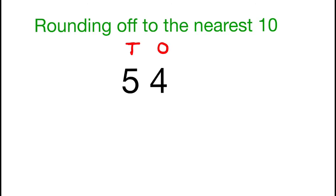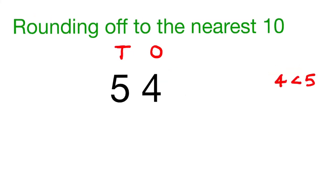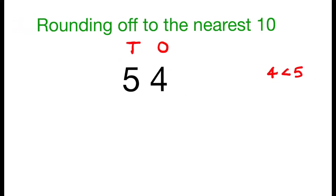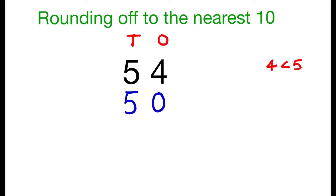In the number 54, the digit in the ones place is 4. Since 4 is less than 5, there will be no change for the digit in the tens place. We write 5 in the tens place. Since we are rounding off to the nearest tens, the digit in the ones place should be 0. We write 0 in the ones place. So, we round off 54 as 50, correct to the nearest tens.